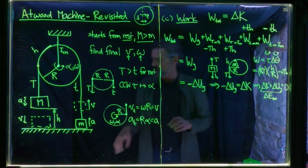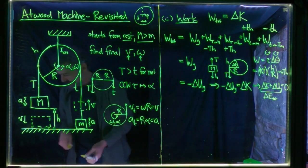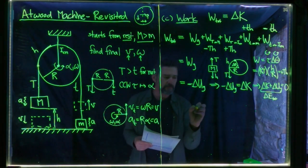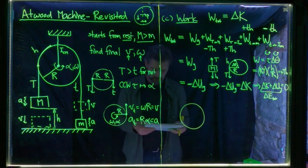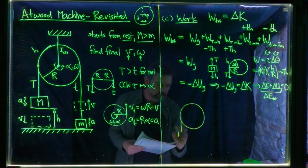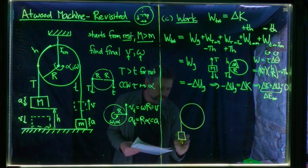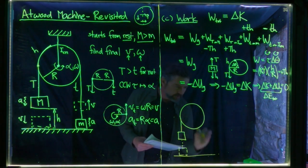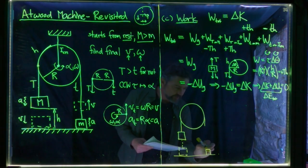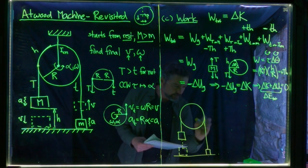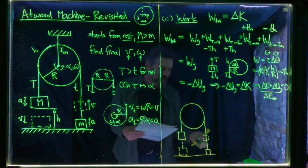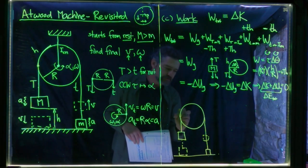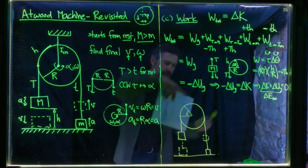Analyzing a problem in terms of energy transfer often reveals really interesting aspects of how nature gets things done. Let's look at what's happening in this Atwood machine: we have the pulley, a mass big M falling through height H to the ground, and a mass little m starting on the ground and rising through the same height H. There are linear displacements H and an angular displacement delta theta for the wheel.